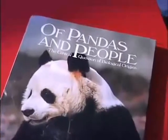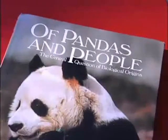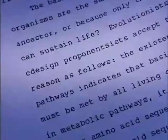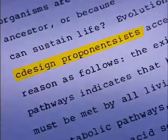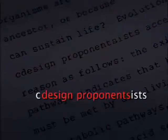What's clear is that the editors simply changed the language to bypass the Supreme Court decision. More than that, we found that the editors had actually been pretty sloppy in some cases. On one page, we found a very peculiar word: 'cdesign proponentsist.' It became very clear that they had just done a lazy or hasty cut-and-paste job. The word 'cdesign proponentsist' was the missing link and proof that intelligent design is no more than creationism in disguise.